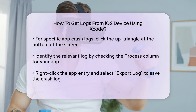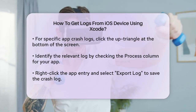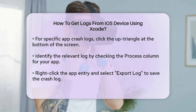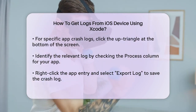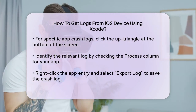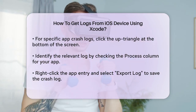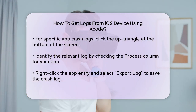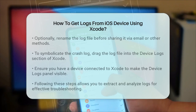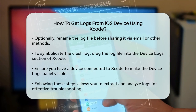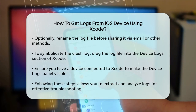If you need to symbolicate the crash log — which means translating the log into something more readable by showing source file names and line numbers — you can do this within Xcode as well. Simply drag the crash log file into the Device Logs section of the Xcode organizer. If the correct symbol files are on your system, Xcode will symbolicate the log automatically.